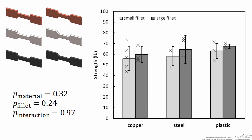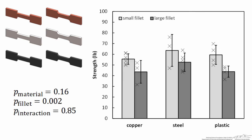Here's a simulated data set in which the material made a significant difference, but the fillet radius didn't make any difference whatsoever. We see a great deal of overlap between the data sets for the small and large fillet, and consequently we get a relatively large p-value for that factor. Here's another simulated data set in which neither the material nor the fillet made a significant difference — the breaking strength is about the same across the board, with significant overlap between all six samples. And in another set, the material made no difference, but the large fillet actually decreased the strength of the material, giving a relatively small p-value for the fillet.